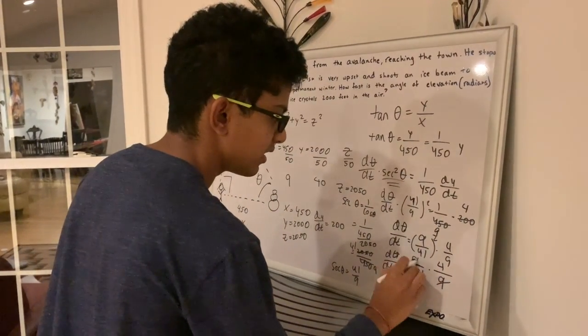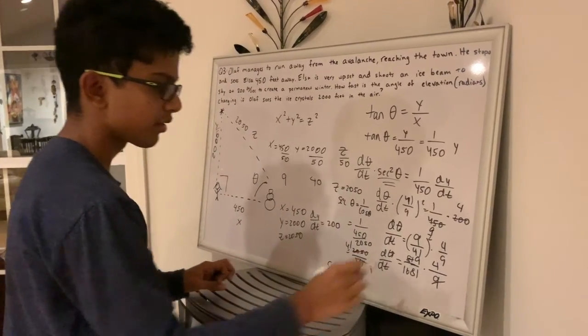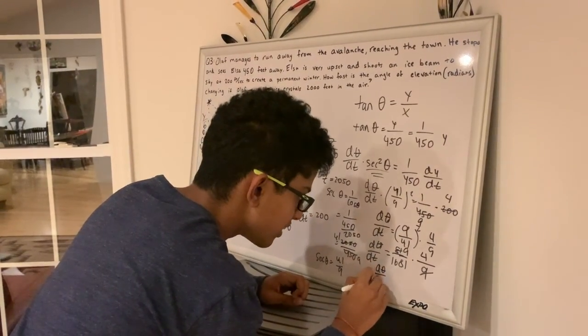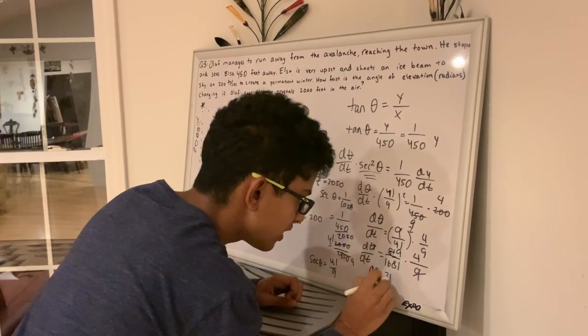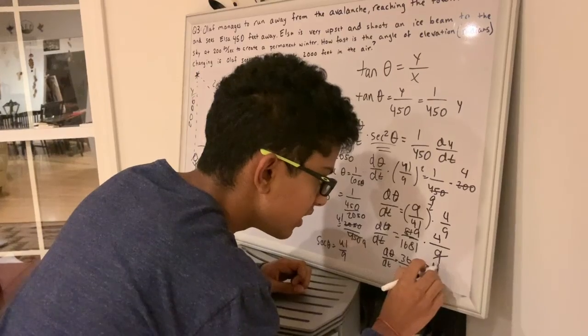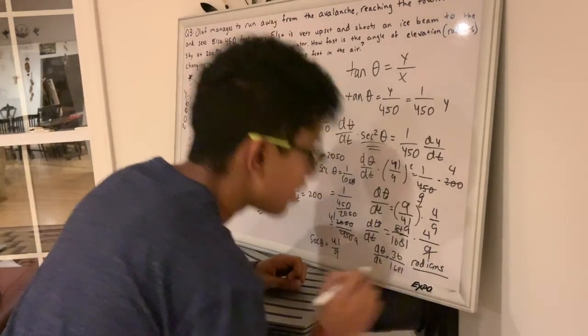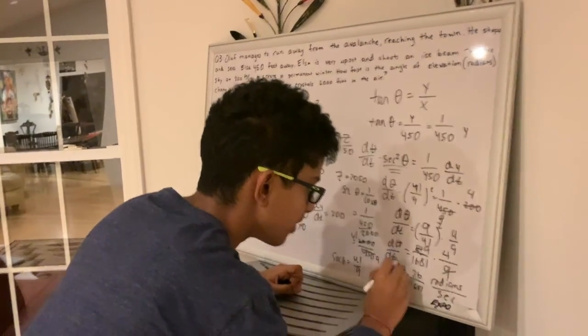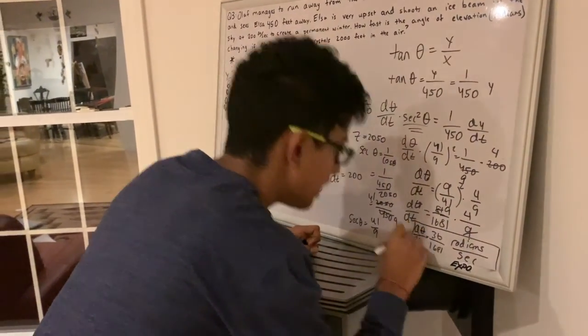So we can simplify this. 9 cancels with the 81 over here. So it will be 4 times 9 which is 36. So d theta over dt equals 36 over 1681 radians per second. So here is your answer. Thank you!